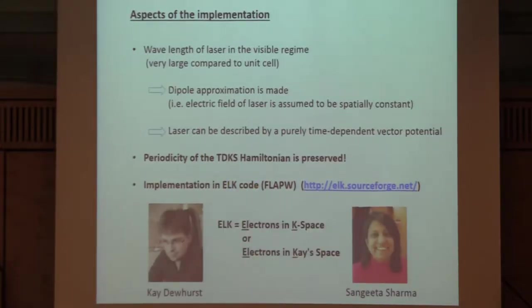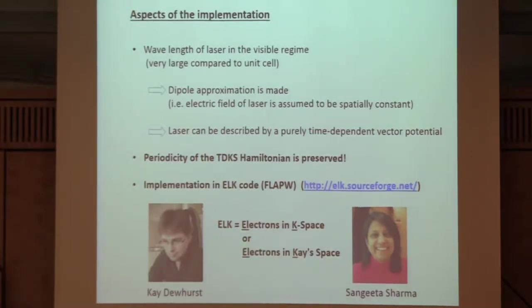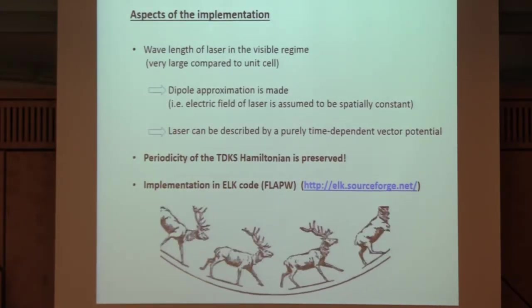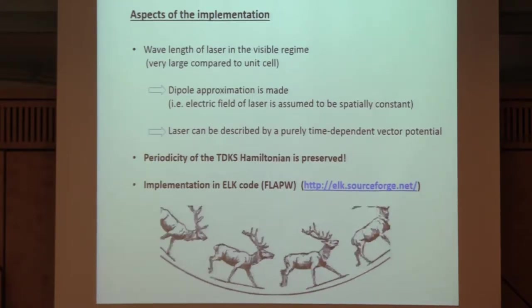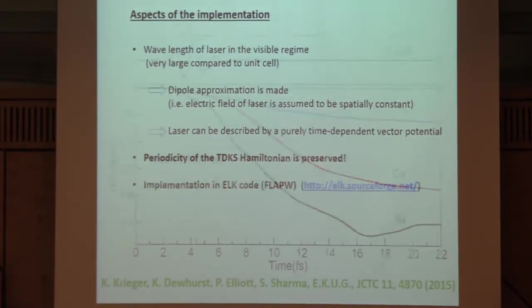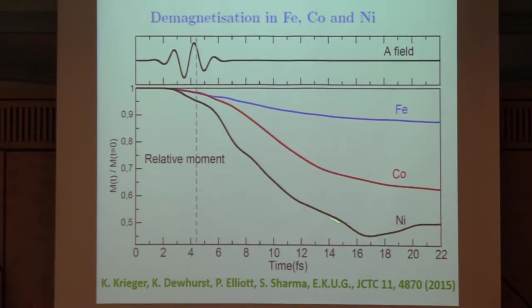What we use is the ELK code—ELK stands for electrons in K-space. The developers are K. Dewhurst and Sangeeta Sharma. These people succeeded in making these codes time-dependent. We do real-time propagation of these time-dependent orbitals. The result we are now going to analyze is that the moment decreases on a very fast time scale of 16 femtoseconds or so. This would be an enormous speed-up if we could make this useful in a device.